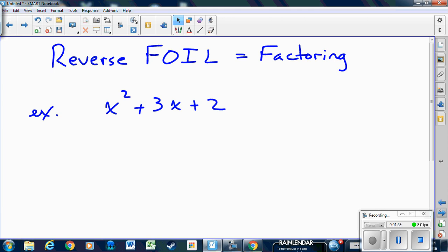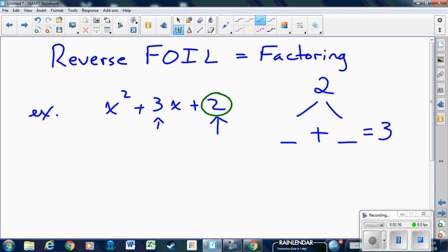So reversing FOIL is what factoring is. We want to reverse what we just did by using that pattern. What I like to do is set up a little tree where I take the last number and put it at the top of the tree. I'm breaking that number up because I need two numbers that multiply to that number but add to the middle number, which is 3 in this case. All students need to remember is that the last number goes at the top of the tree and the middle number goes at the end of the tree.